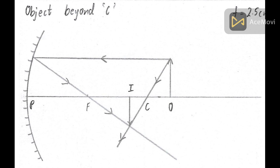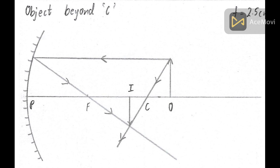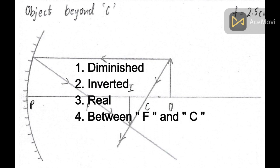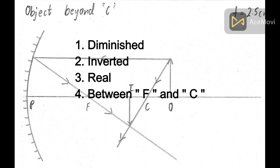When the object is placed beyond c, the image is formed between f and c. The image is diminished, inverted, and real.